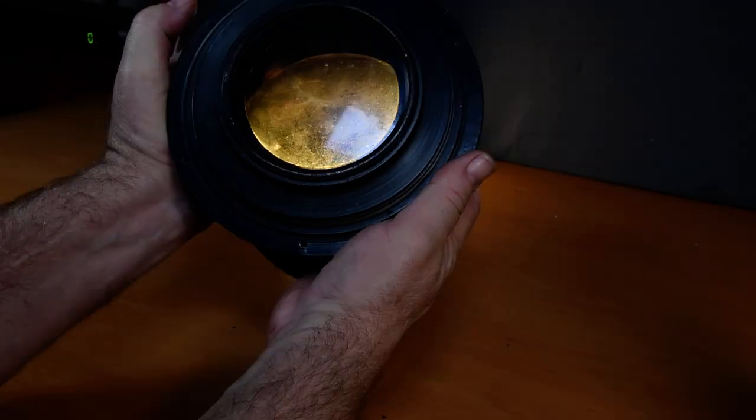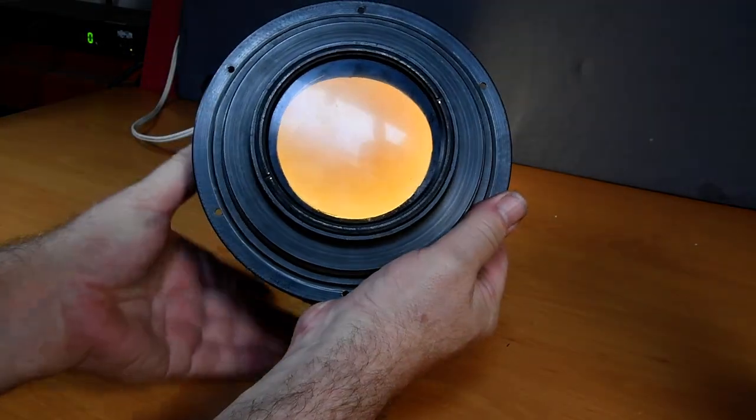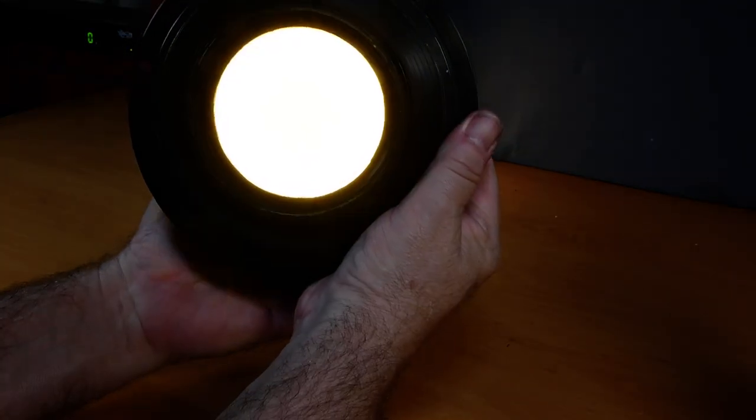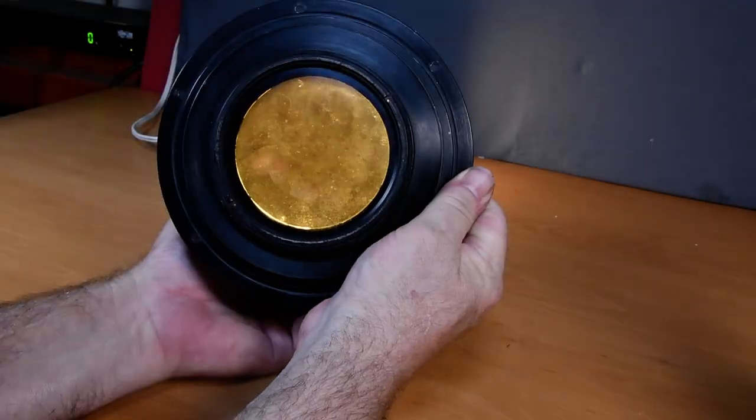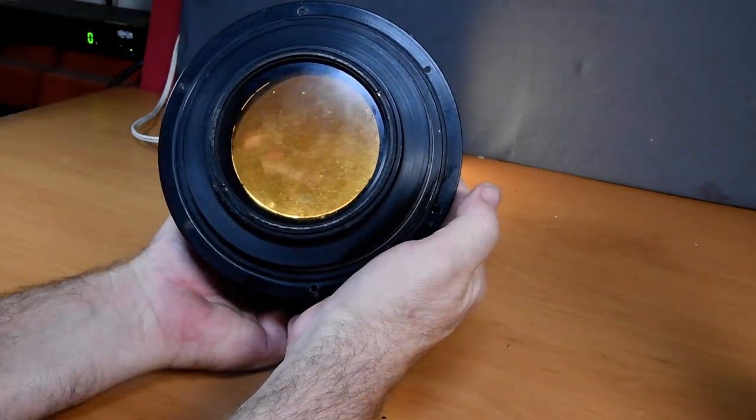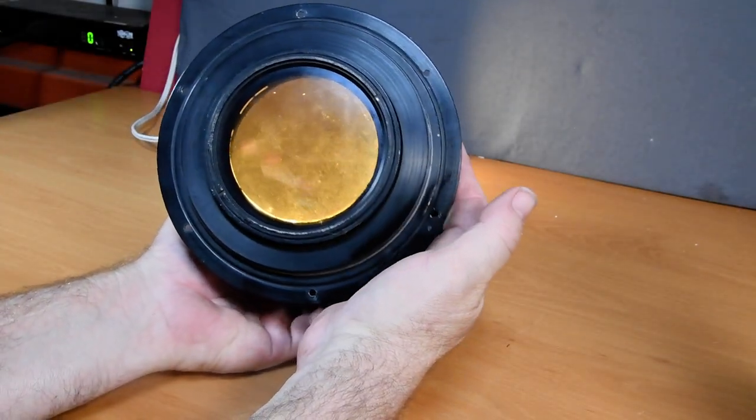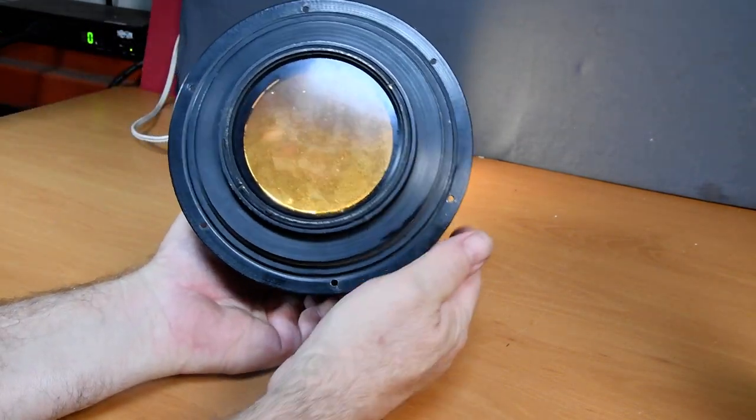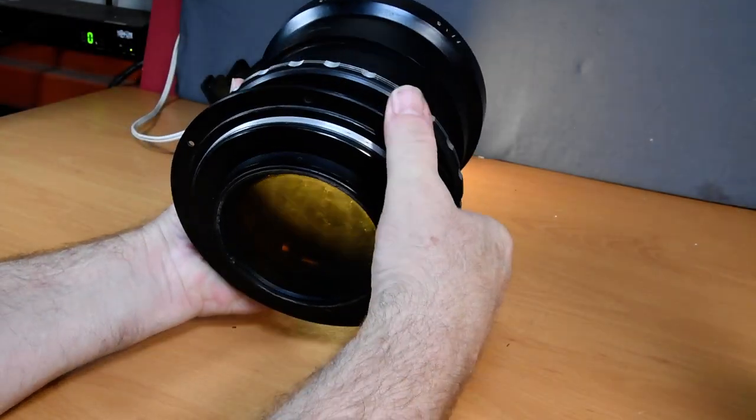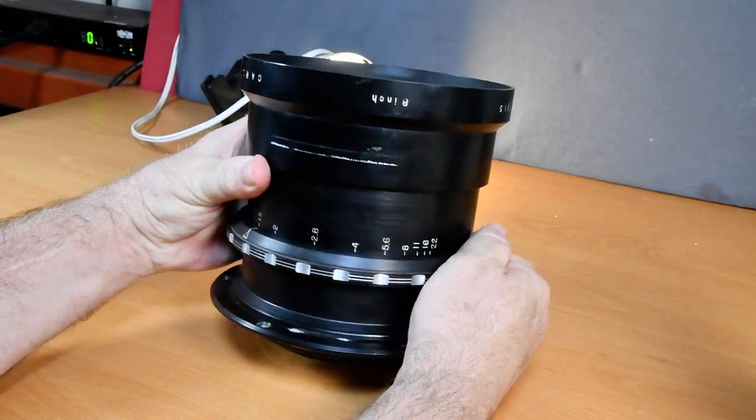So you can see that going through the lens looks fairly clear, but then there's definitely some surface issues on the front and the back. Looks like it takes six screws to hold it in place and you can see the aperture.